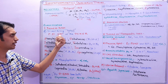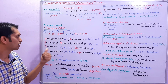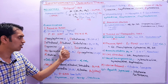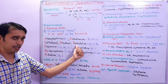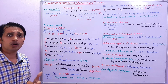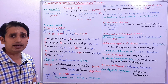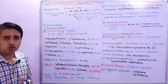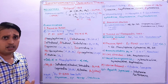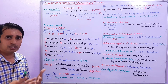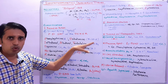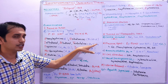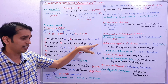Beta-2 agonists act as bronchodilators and can be used in asthma. However, beta-2 agonists acting on beta-1 receptors can cause tachycardia as a side effect.